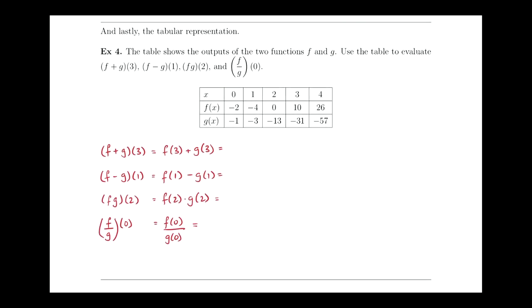The last representation, just for review, we did graphical first, we did algebraic second, and then this is the third, or the tabular representation. Meaning, instead of giving you an equation, or instead of giving you a graph, what happens if you're given some selected table of values, or selected values in a table?